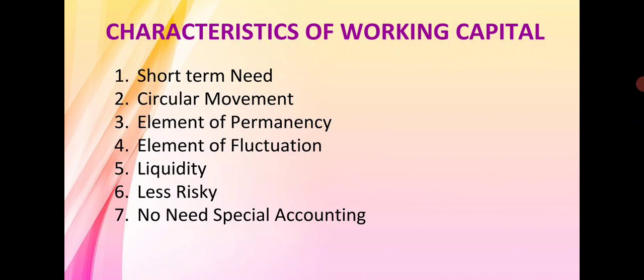The fourth characteristic is an element of fluctuation. There is no permanent fixed amount of working capital. The requirement is permanent, but the amount is totally fluctuating. If the demand is low in the market, the requirement for working capital is also going to change. When the production cycle is running properly and cash inflow and cash outflow match each other, the amount required for working capital is again totally different.